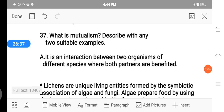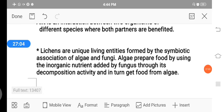Then the last 37th question is, what is mutualism? Describe with any two suitable examples. It is an interaction between two organisms of different species where both partners are benefited. The two different species of organisms lead their life together, but both the organisms get benefited, not harmed. First, the lichens are unique living entities formed by symbiotic association of algae and fungi. Lichens are symbiotic of algae and fungi. This is a best example for symbiotic association or mutualism. Algae prepare the food by using inorganic nutrients added by the fungus through its decomposition activity, and in turn get the food from the algae. Algae prepare the food, provide it to the fungus. Then the fungus, due to decomposition activity, provides the inorganic nutrient to prepare the food by algae.